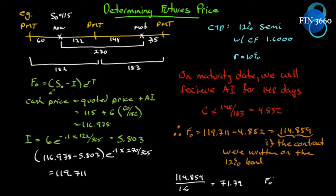We assumed the cheapest to deliver is the 12% bond, giving us 114.859 on that bond. But this is not a futures contract on the 12% bond — it's a futures contract on a standard government 6% semi-annual bond. Since we know the conversion factor is 1.6, we divide: 114.859 / 1.6 = 71.79. That's our futures price on the T-bond contract with an underlying delivery of a standard government 6% bond.